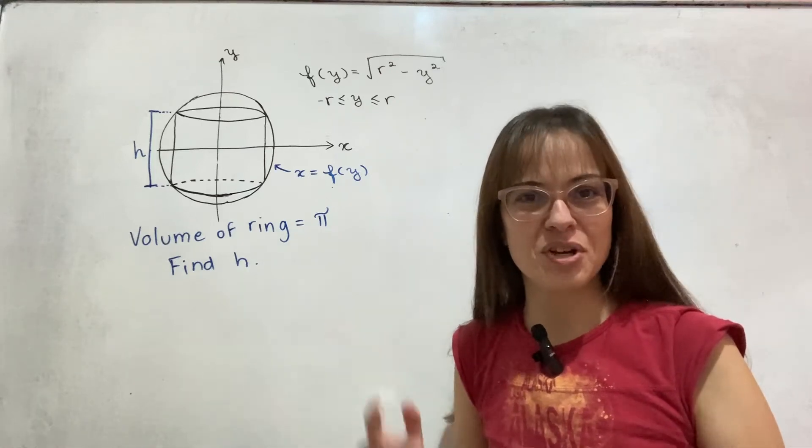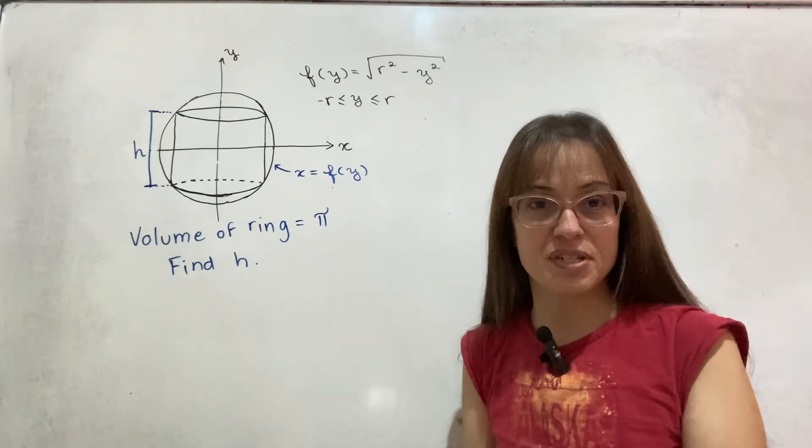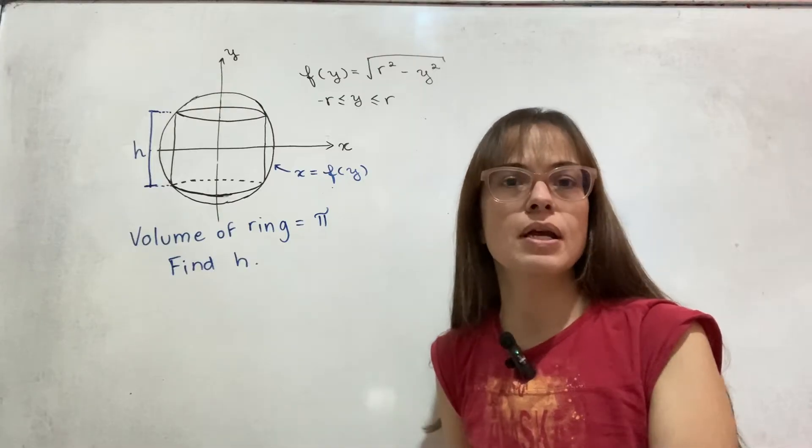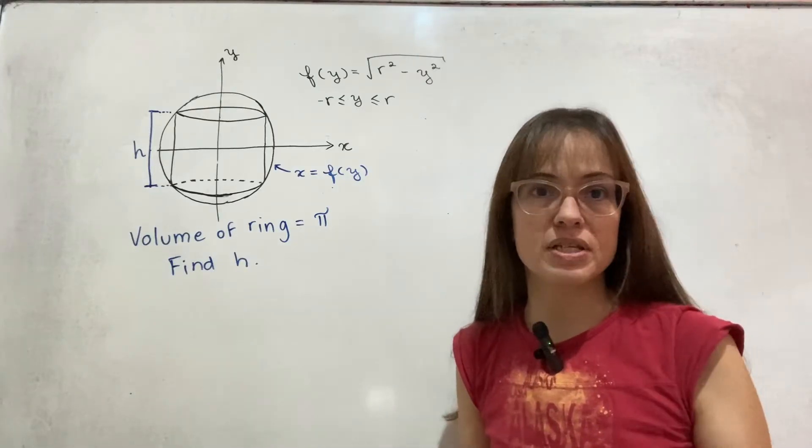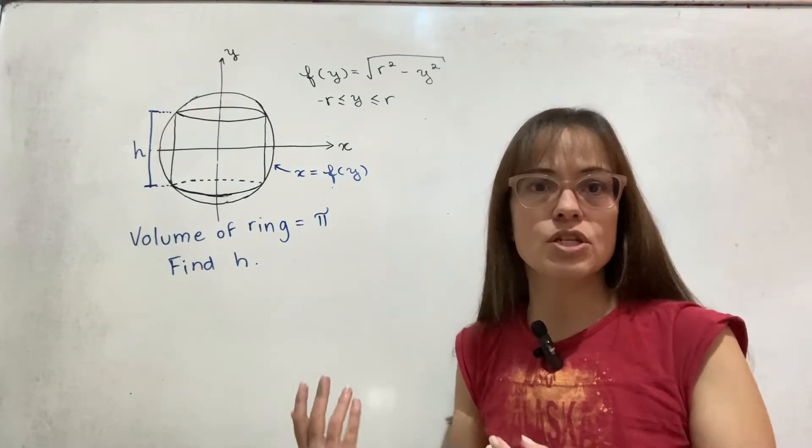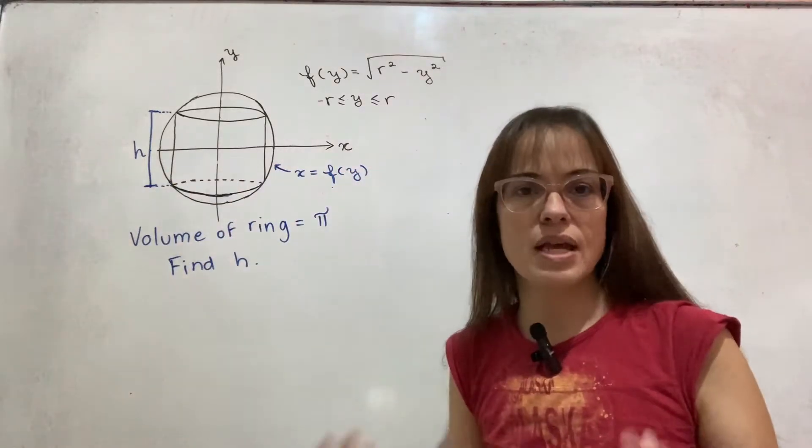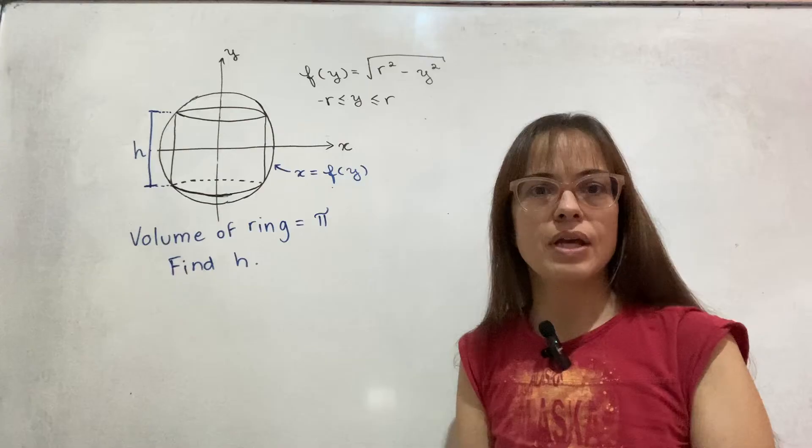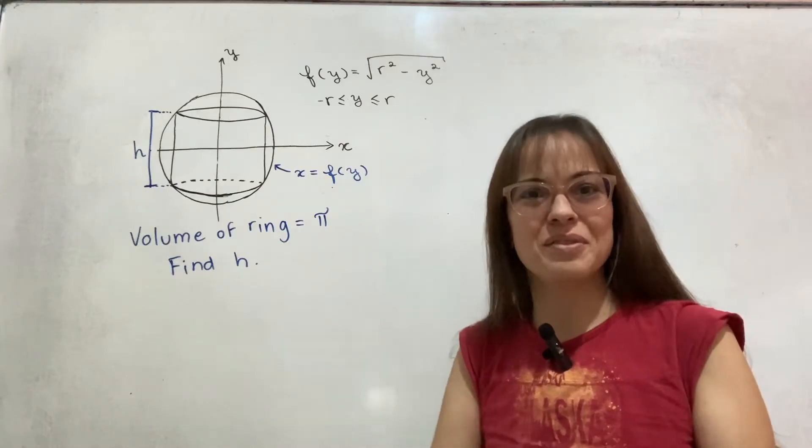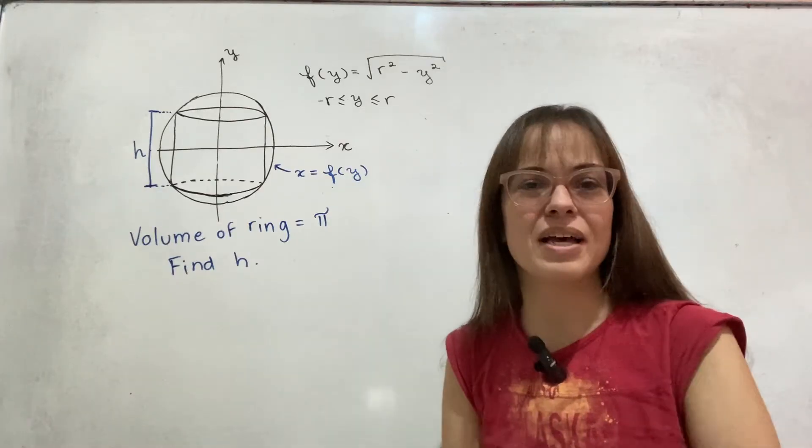Today I'm going to be solving the solids of revolution question from this year's AA high-level exam. There isn't anything really surprising about this question. It's as usual, they give you the function, they tell you where it rotates, and you just have to calculate the volume by using the solids of revolution formula that is in the booklet.